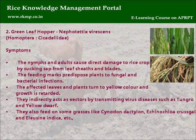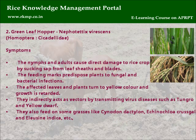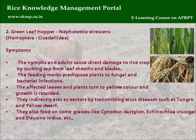Green Leaf Hopper: Nephotettix virescens, Order Homoptera, Family Cicadellidae. Symptoms: Nymphs and adults cause direct damage by sucking sap from leaf sheaths and blades. Feeding marks predispose plants to fungal and bacterial infections. Affected leaves and plants turn yellow and growth is retarded. They also act as vectors, transmitting virus diseases such as tungro and yellow dwarf, and feed on grasses like Cynodon dactylon, Echinochloa crusgalli, and Eleusine indica.